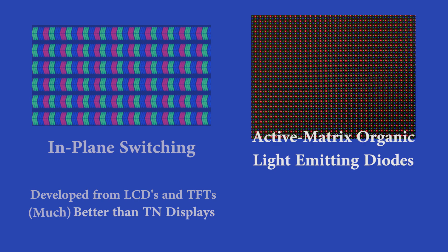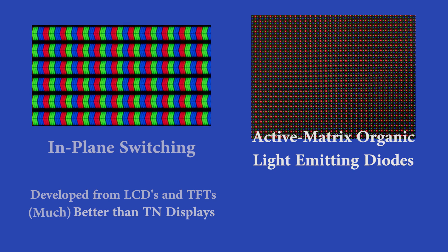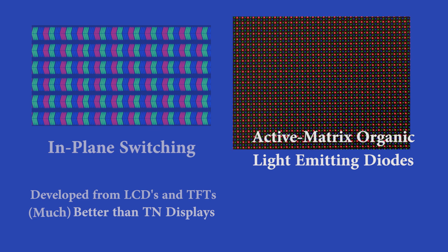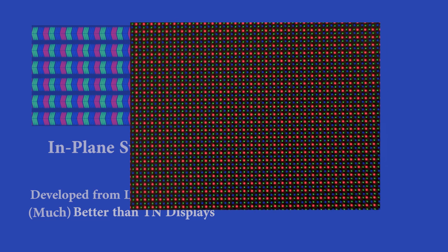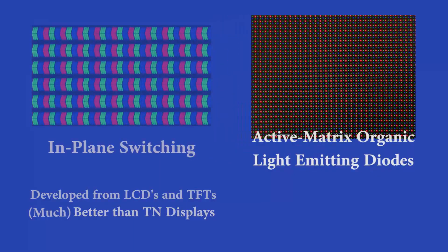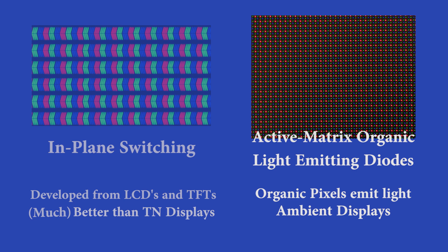AMOLED stands for active matrix organic light emitting diodes, and is based on active matrix technology — as is IPS. This means that thin film transistors regulate each pixel's power themselves without the support of external wires. One important aspect of AMOLEDs is that organic LEDs emit light, and black color in AMOLED displays is equivalent to an off pixel, which helps with ambient display technology usage.